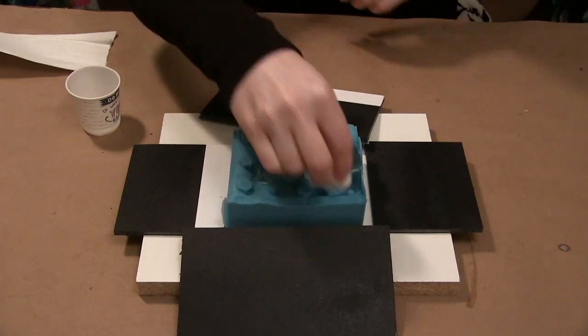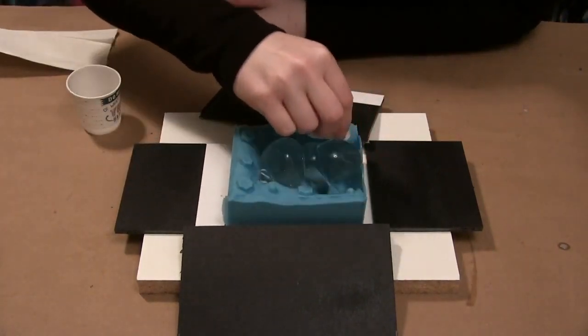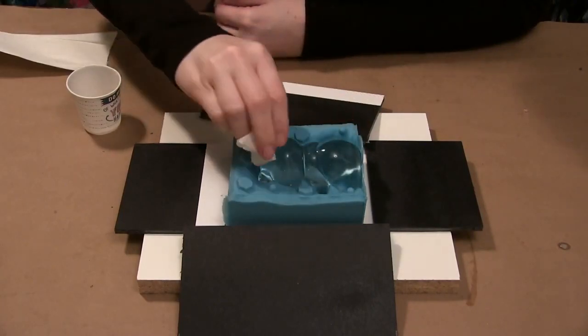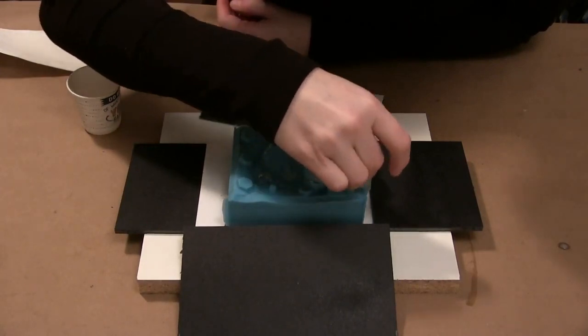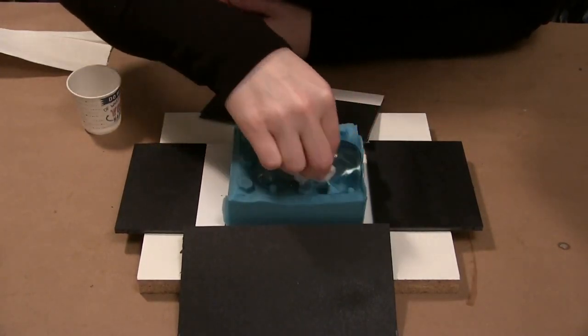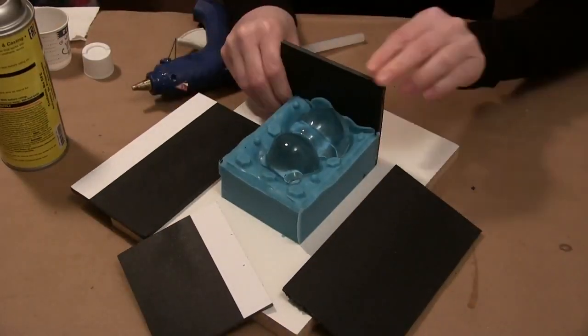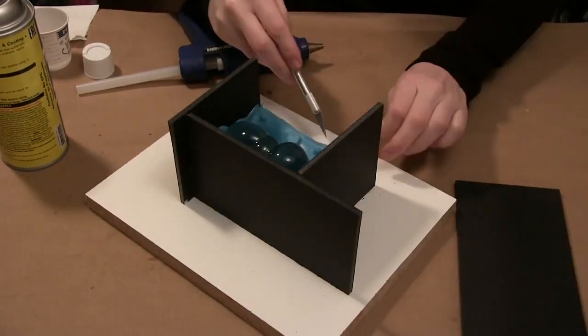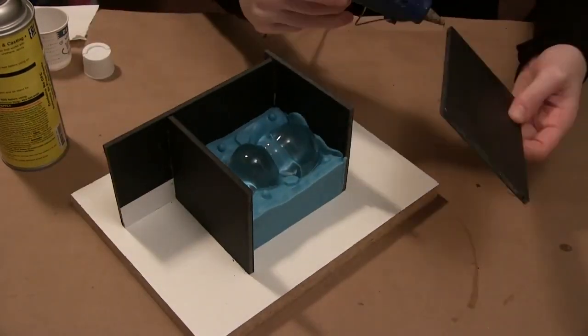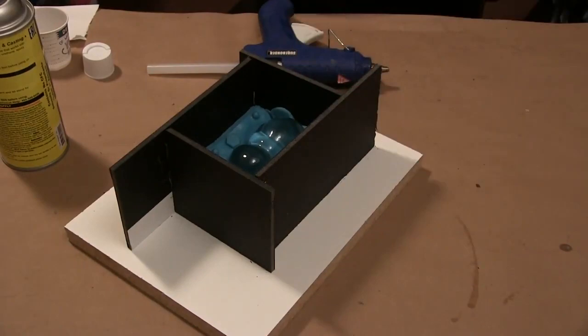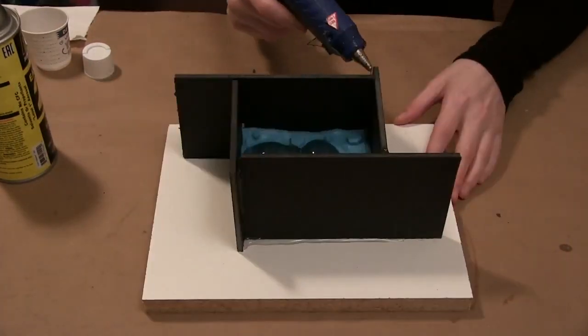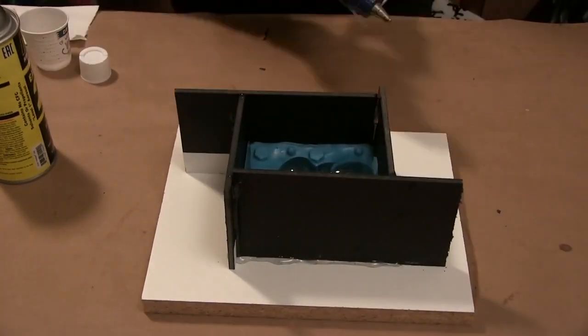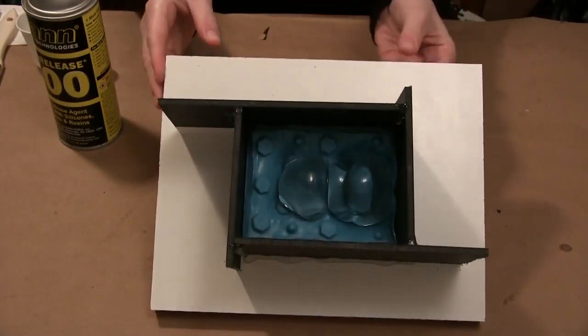The next step, of course, would be to be putting our mold walls up again. Again, I'm also cleaning my model of any clay residue that may have been left behind, and I'm just using a little isopropyl alcohol to do this. Now, I'm ready to assemble my mold box around the first half of my silicone. Okay, that's looking great.